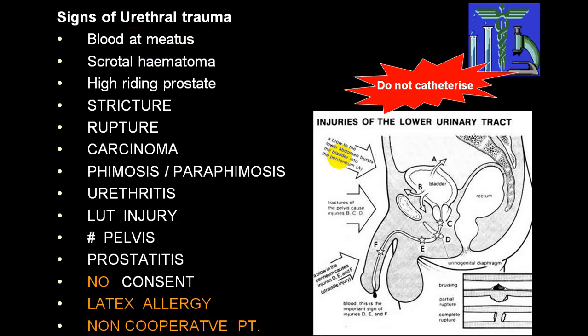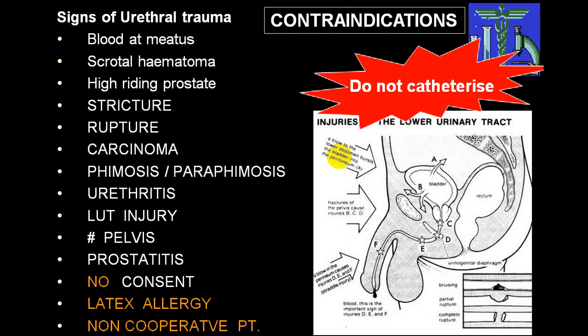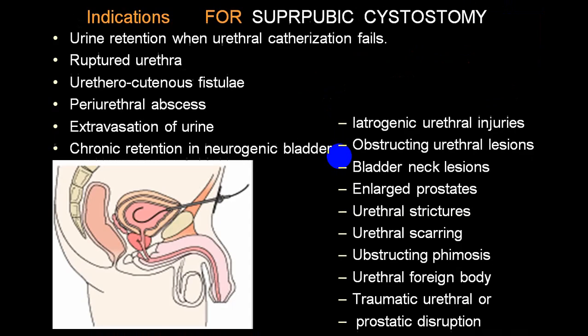Catheterization is absolutely contraindicated in injury to the lower urinary tract, bleeding at the meatus suggesting lower urinary tract injury, pelvic fracture, and prostatitis. Non-medical contraindications include patient not giving consent, latex allergy, and an absolutely non-cooperative patient — in all these cases you should not attempt urethral catheterization.